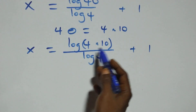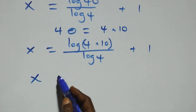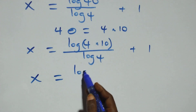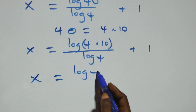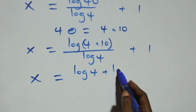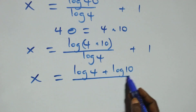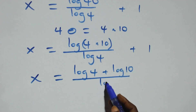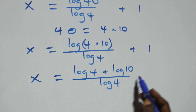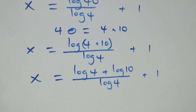Then here, we apply the log product rule as well. We have x equals to log 4 plus log 10, all over log 4, plus 1.